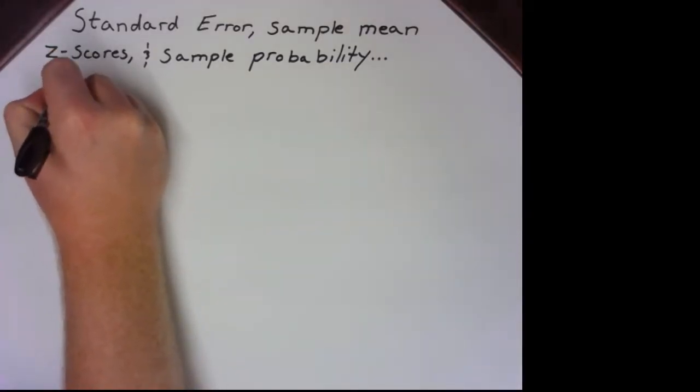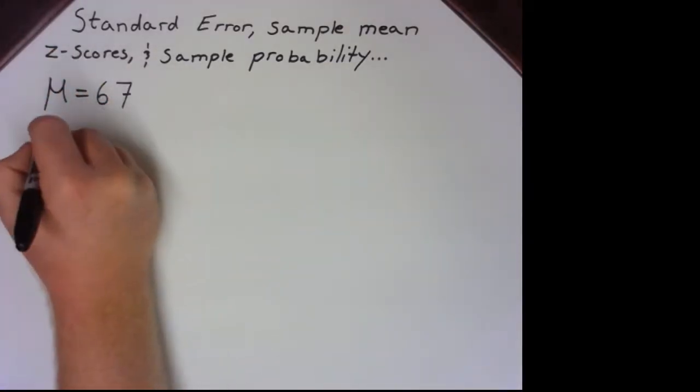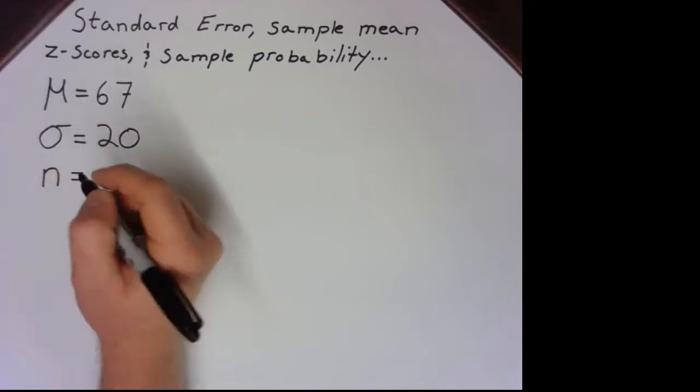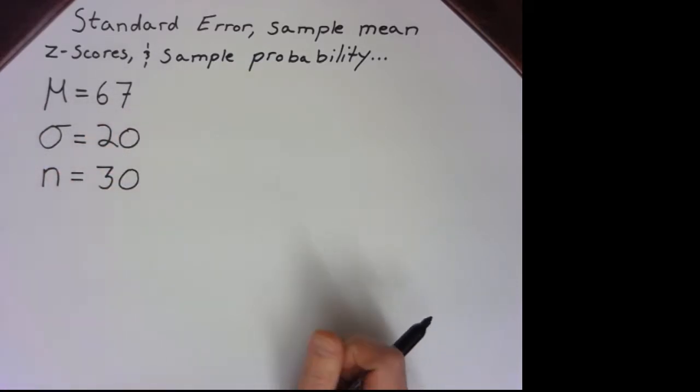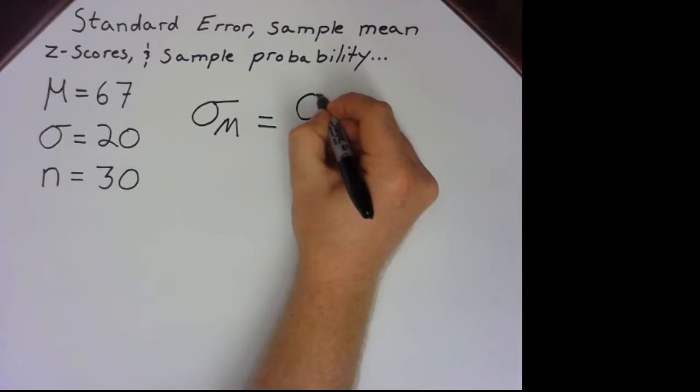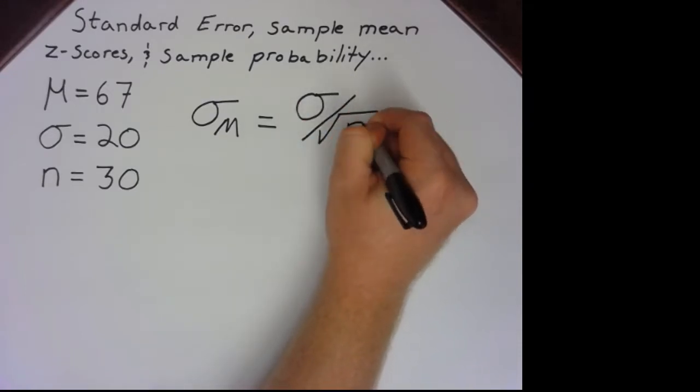Now, let's say we're given a problem where we're told the mean of the population is 67, the standard deviation is 20, and we're looking at sample sizes of 30. How do we find the standard error? Well, the standard error is the population standard deviation divided by the square root of our sample size.